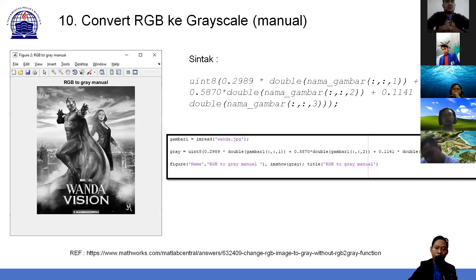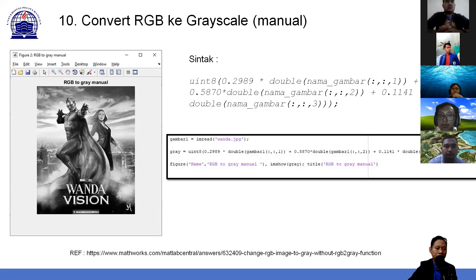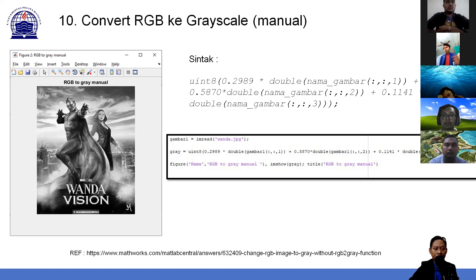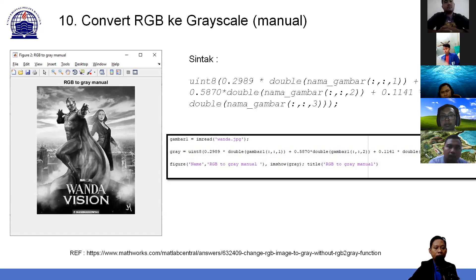Kalau ditampilkan nanti RGB to grayscale manual hasilnya hampir sama dengan menggunakan fungsi rgb2gray. Tentang sintaknya: kenapa ada double dan uint8? Double karena pikselnya itu bernilai integer, dikalikan dengan pecahan, jadi agar tipe datanya sama kita jadikan double dulu. Setelah itu gambar tipe datanya diubah ke uint8 (unsigned integer 8), baru bisa ditampilkan gambarnya dalam figure.